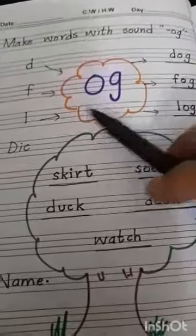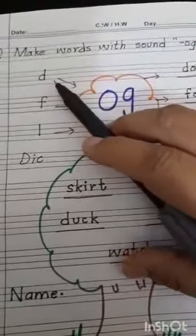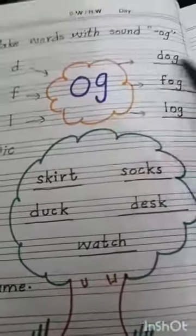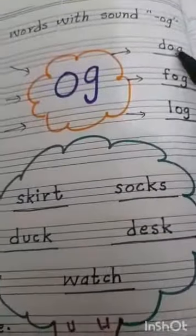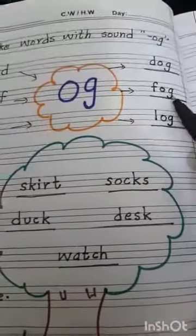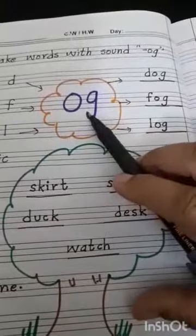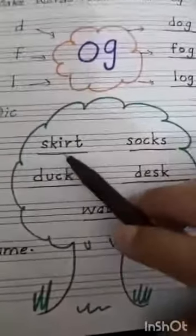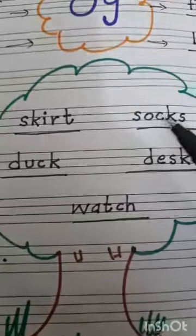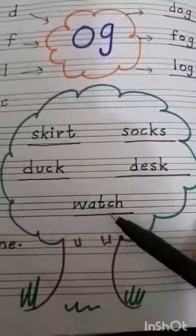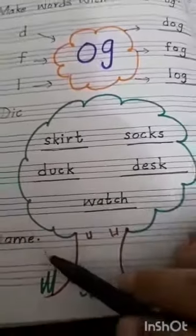So here we are. We are going to look at the words. Now this dictation is: S-K-I-R-T, skirt; S-O-C-K-S, socks; D-U-C-K, duck; D-E-S-K, desk; W-A-T-C-H, watch.